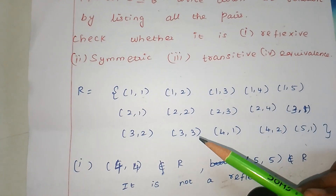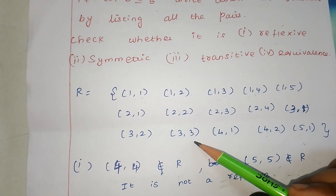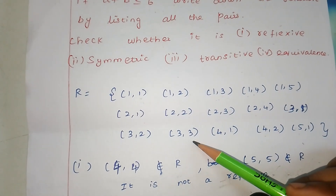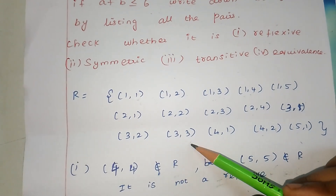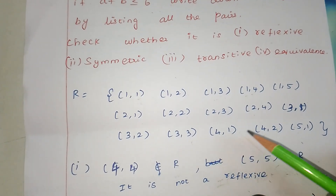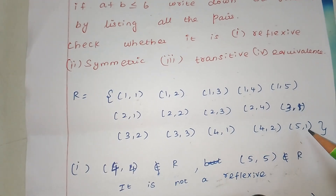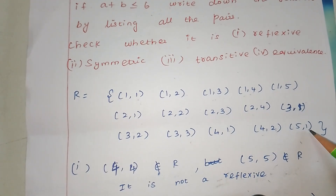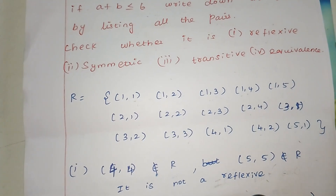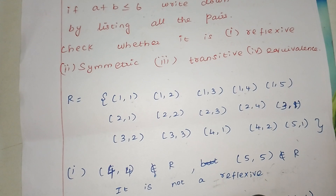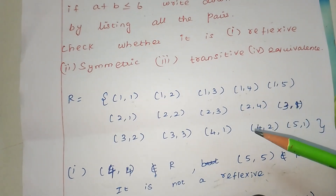Next, (3,1), (3,2), (3,3) are valid — because 3+3=6. Then (4,1), (4,2) — because 4+2=6. And (5,1) — because 5+1=6. That gives us all the pairs. So this is the complete relation.